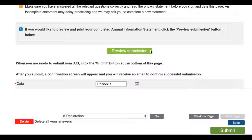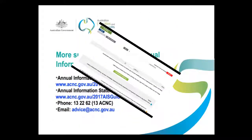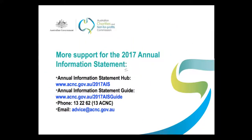And for assistance with other parts of the 2017 Annual Information Statement, you can view the other videos in this series. As always, if you have any questions or need any specific assistance with the Annual Information Statement, you can call us on 13 2262 or email us at advice@acnc.gov.au. I hope this has been useful and thanks for watching.